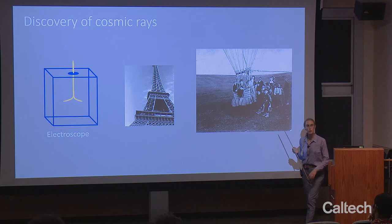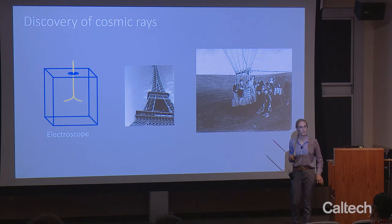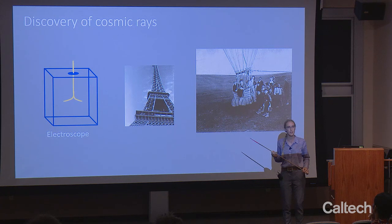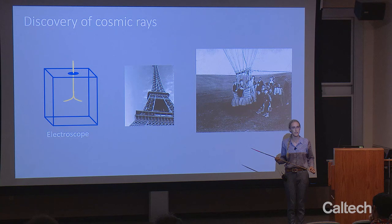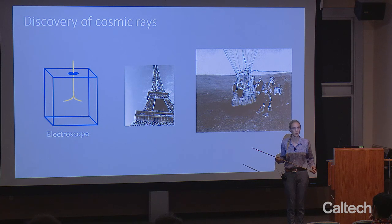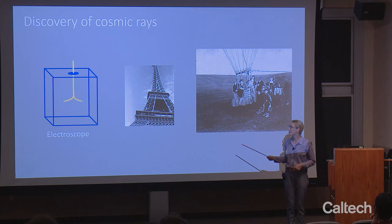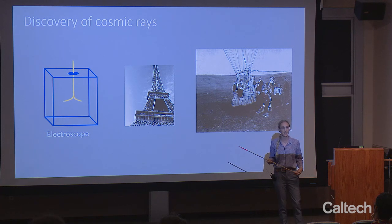Those are the record-setting highest energy cosmic rays. Going back to the discovery of cosmic rays — some things in astronomy and physics get predicted, like gravitational waves and black holes, which were predicted long before they were observed. But other things get observed first and then have to be explained. Cosmic rays have always been in this latter category. They were not expected until they were found, but their story goes back to the origins of particle physics as a field.